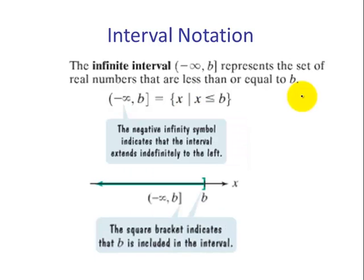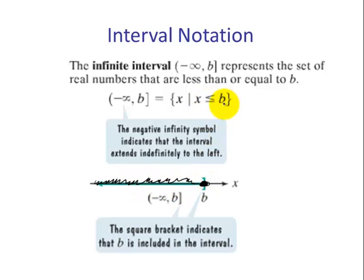Looking from the other end: all values from negative infinity up to some value B. This time it can equal B, so that would be a solid circle. As an inequality, these numbers are less than or equal to B. In interval notation, we start with the smallest — negative infinity — use an open parenthesis because we can never reach or equal negative infinity, then a comma, then our largest value B, and we use brackets because it can equal B.